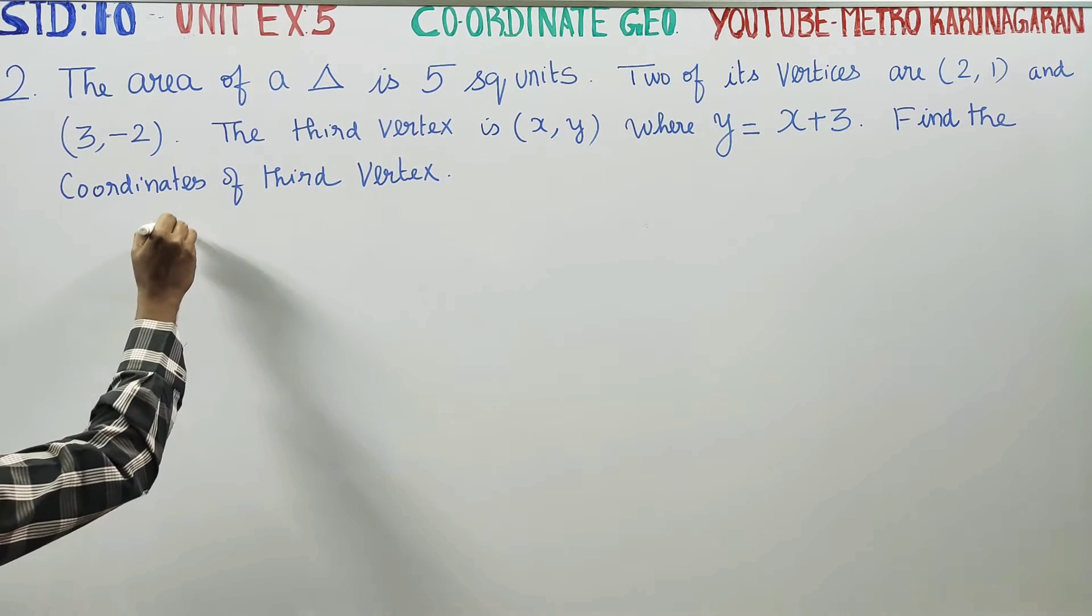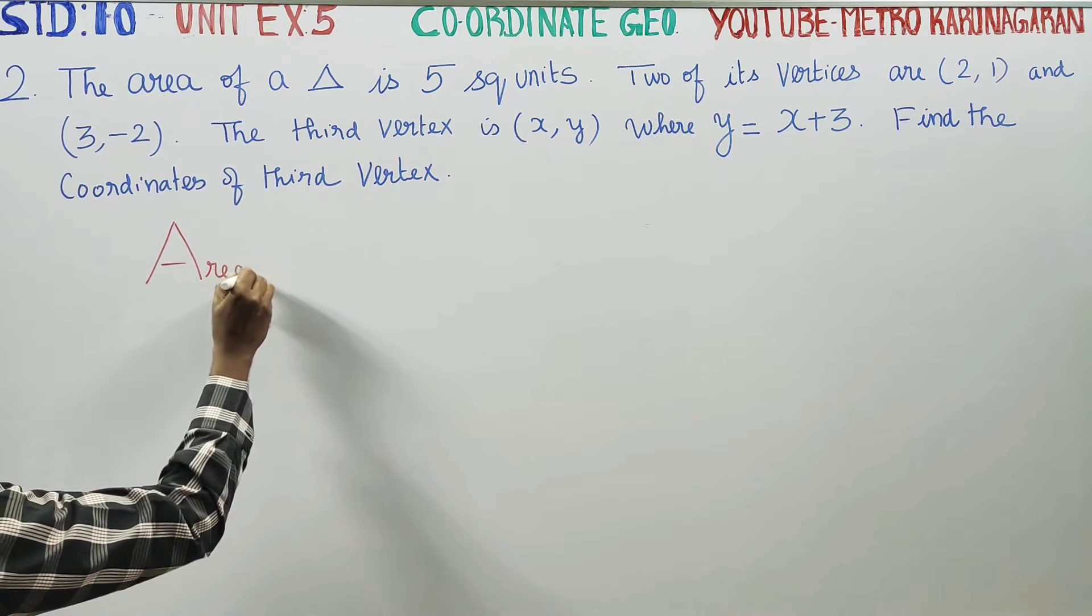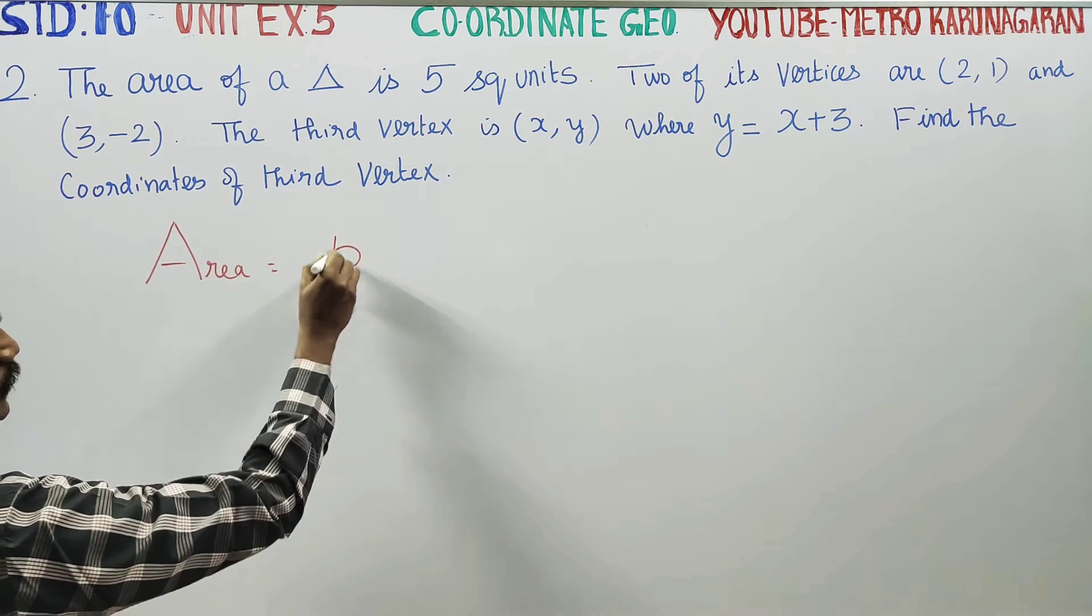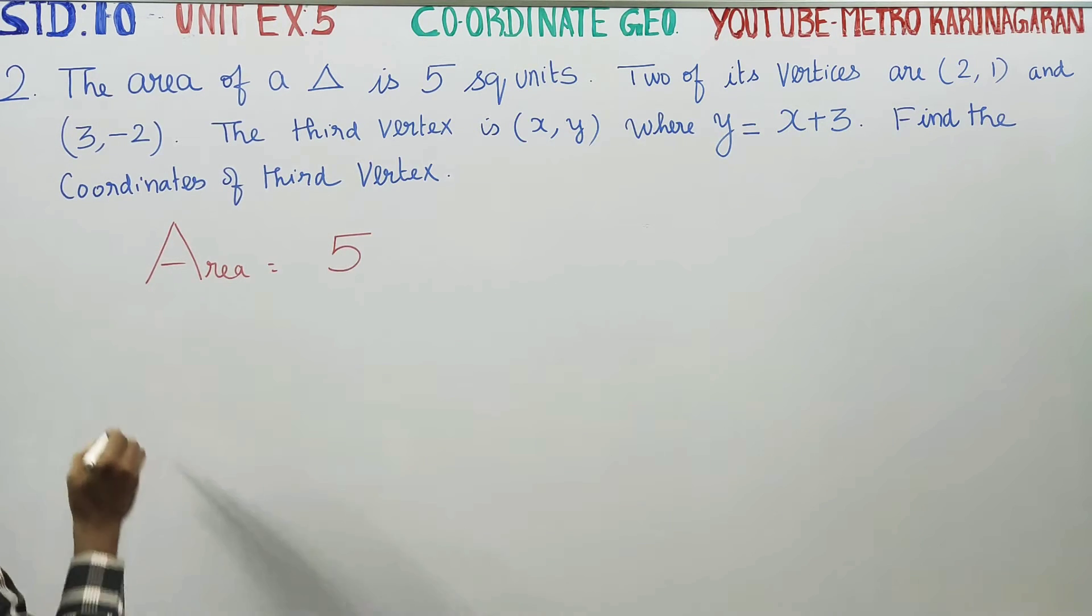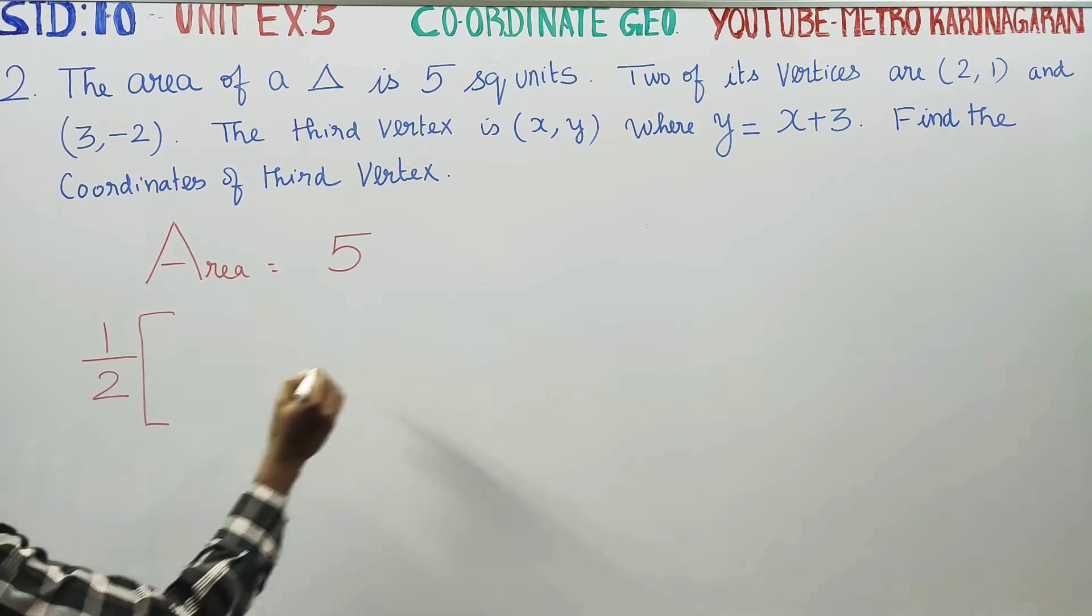They have given us the area of the triangle. Area of triangle is equal to 5 square units. So which formula will we use?